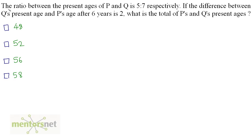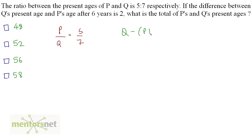The next question. The ratio between the present ages of P and Q is 5 is to 7 respectively. If the difference between Q's present age and P's age after 6 years is 2, what is the total of P's and Q's present ages? So P by Q is equal to 5 by 7. Q's present age minus P's age after 6 years, so Q minus P plus 6 is equal to 2.